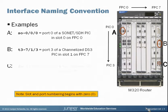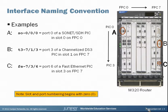And a final example — example C. That circle on example C is highlighting port 6 on that Fast Ethernet card. With the intuitive naming here, we have FE-7/3/6. You can see in the diagram that's a Fast Ethernet card in FPC slot 7, PIC slot 3, and we've highlighted port 6.